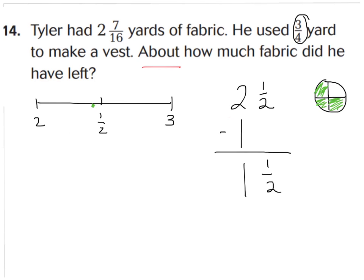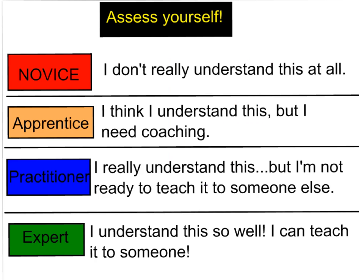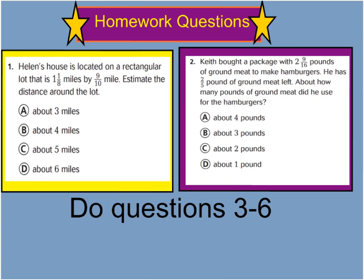Go ahead and turn your page over to the back side and we'll begin our homework problems. You can do numbers one and two all by yourself by estimating and reading your question carefully. Remember, this is estimating — it's not actually solving for the real answer. Please make sure you look for clue words like 'estimate' or 'about.' After you answer those two questions, continue on with three through six for review. Don't forget to assess yourself at the top of your page: write number one if you're a novice, two if you feel like an apprentice, three a practitioner, or four if you feel like an expert on this topic. We'll be practicing more of this tomorrow in class, so you'll feel more like an expert as we go along. Have a great night.